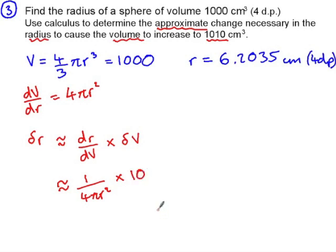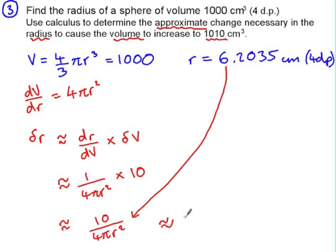and the change in volume is 10 cubic centimetres so this is 10 over 4 pi r squared and then we would need to substitute in the value of r that we found earlier to give an approximate change in radius of 0.02 centimetres to two decimal places.